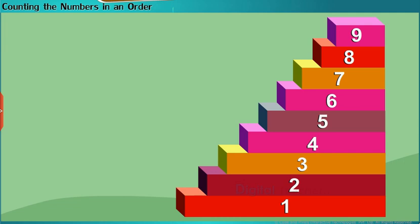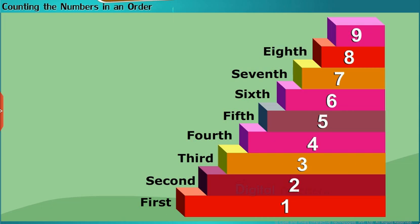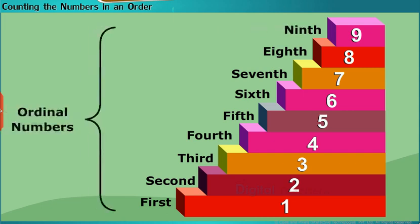Here, a number indicates the place as first, second, or third occupied by an item in an ordered sequence. So these numbers are called ordinal numbers.